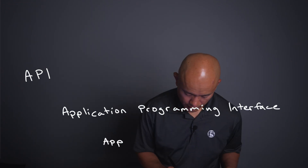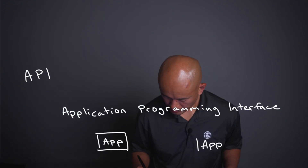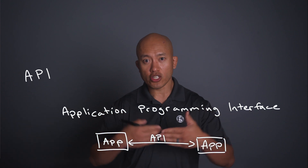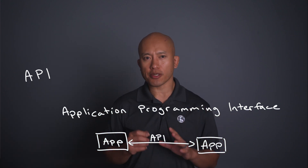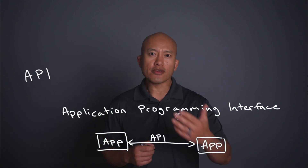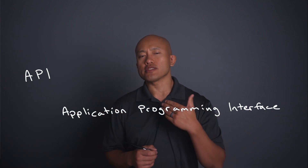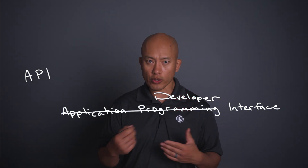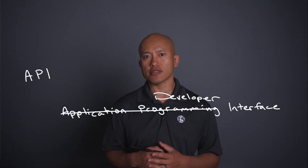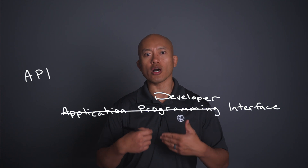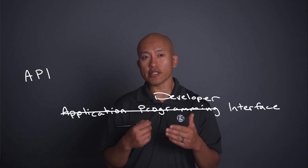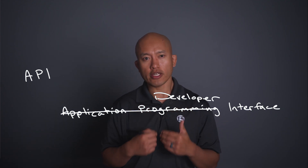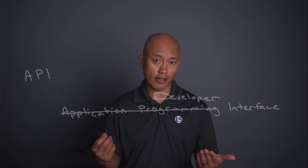Applications can have these application programming interfaces, or APIs, and use them to communicate with each other. But APIs are more than just a communication tool for software. You can think of them as a developer interface. Developers use APIs to interact with applications. This could be building an API to offer up information, or a developer may build an application to consume information from someone else's API.